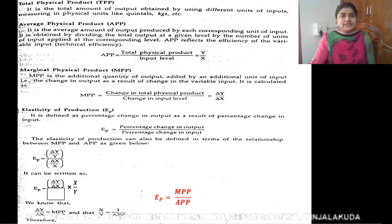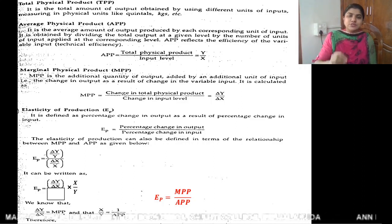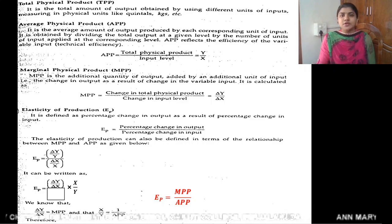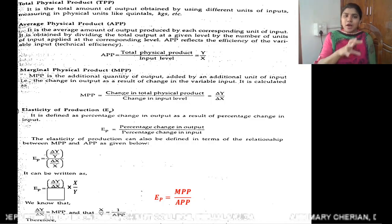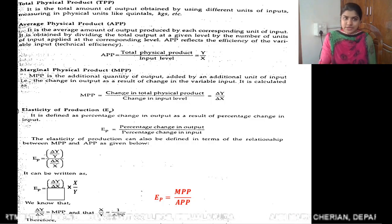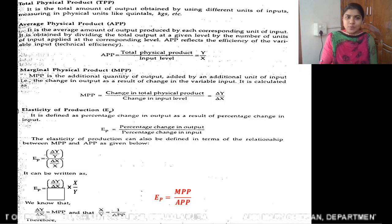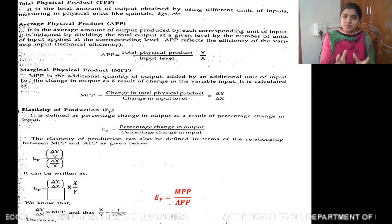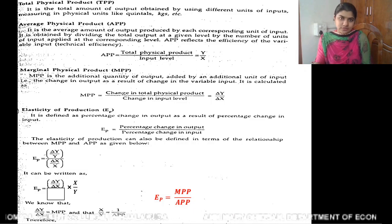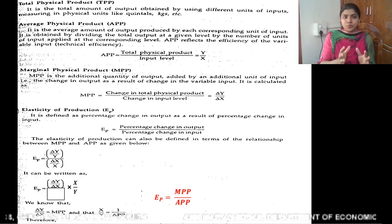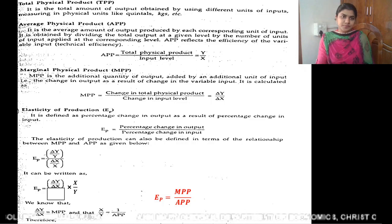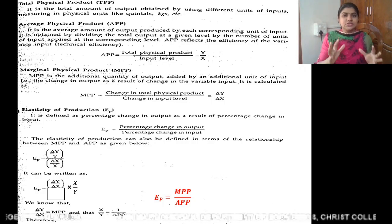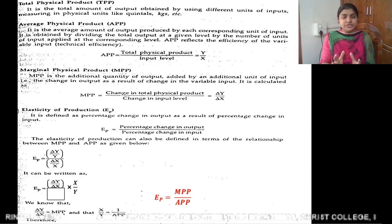The first concept is Total Physical Product, TPP. What is total physical product? It is the total amount of output obtained by using different units of inputs. These are calculated in physical units like quintal, kilogram, etc.